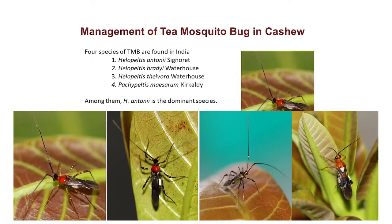Management of tea mosquito bug in cashew. Tea mosquito bug is one of the major pests of cashew. Four species of tea mosquito bug are found in India: Helopeltis antonii Signoret, Helopeltis bradyi Waterhouse, Helopeltis tivora Waterhouse, and Pachypeltis miserum Kirkaldy.